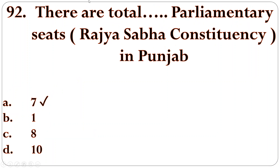Next question: there are total dash parliamentary seats in Punjab. So, parliamentary seats include Lok Sabha constituency and Rajya Sabha constituency. This is a model question — Punjab as the modal question. The same matter can be asked with different states substituted for Punjab, so you need to have a complete grip on this politically. The right answer is number 7. There are 7 parliamentary Rajya Sabha constituency seats in Punjab.